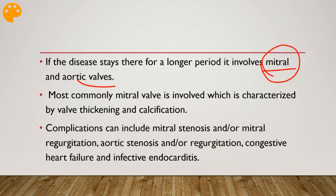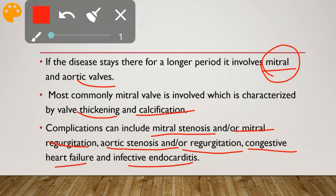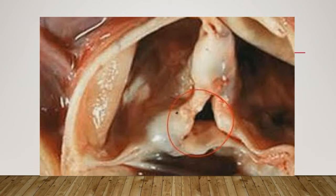Involvement is characterized by valve thickening and calcification. Complications include mitral stenosis, mitral regurgitation, aortic stenosis, aortic regurgitation, congestive heart failure, and infective endocarditis. Here is a picture of the aortic valve involved in rheumatic heart disease.